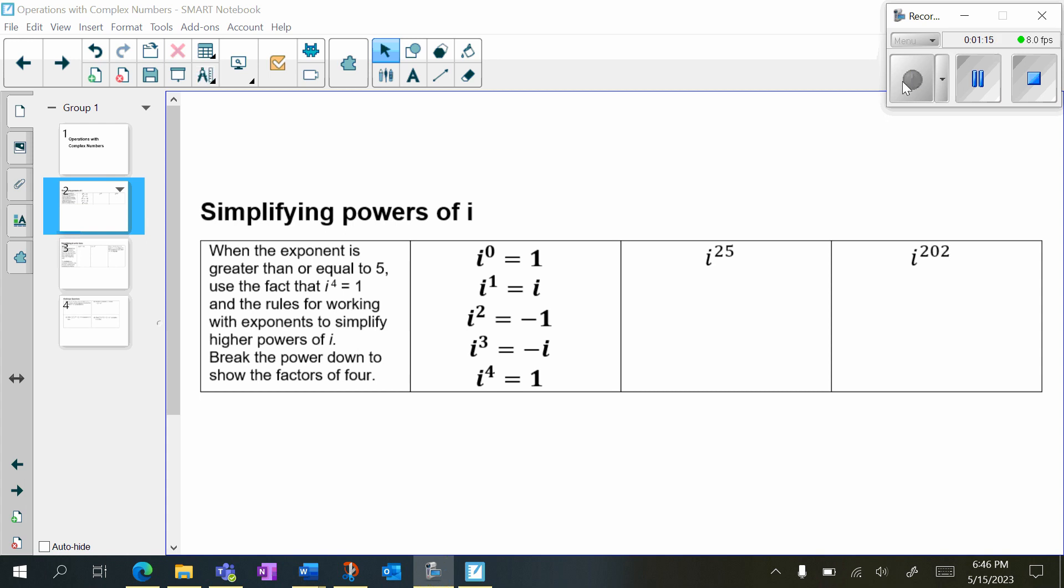One way we can look at it is, how many times does 4 go into 25? So I'm going to divide 4 into 25. So if 4 goes into 25 six times, 6 times 4 is 24, and I'm going to have 1 left over. So if I have 1 as the remainder, i to the 1st power is equal to i.